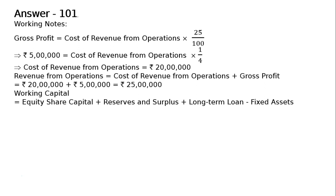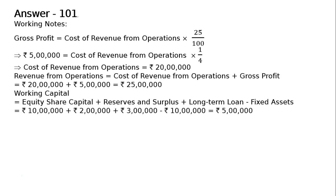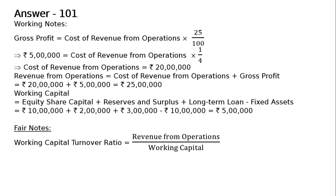Working capital equals Rs. 10 lakhs plus Rs. 2 lakhs plus Rs. 3 lakhs minus Rs. 10 lakhs, which gives us Rs. 5 lakhs.